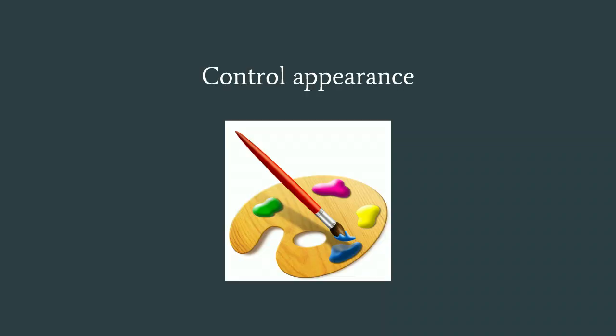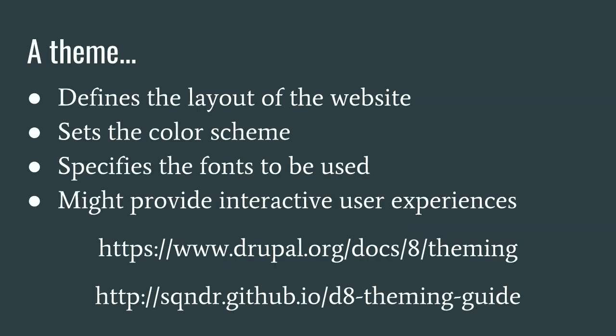We are trying to make Drupal render something — and that something is what we want. The very first thing is themes. Why? Because themes are the ones responsible for controlling the appearance of your website. Among their responsibilities, they define the layout of the website — how it will behave on desktop, tablet, or phone view. They also define the color scheme, the font size, the font face to be used, and they might provide some interactive user experiences. For example, if you have a slideshow, even though it is recommended to do that using modules, there are some themes that provide that interaction out of the box.